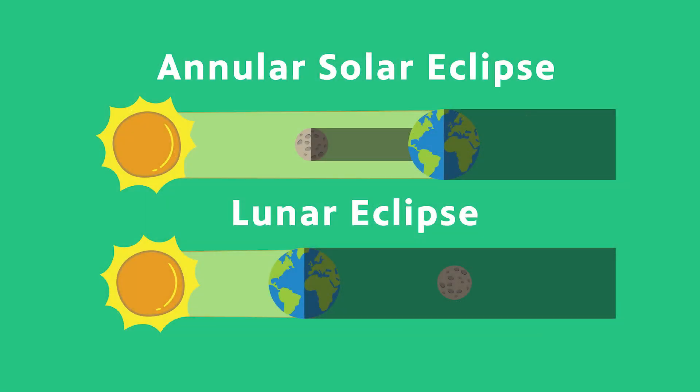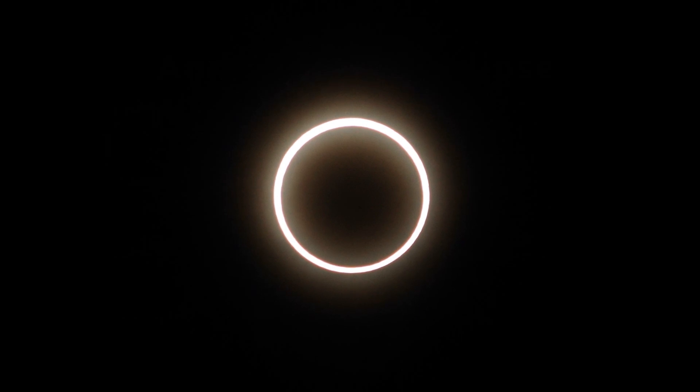With an annular solar eclipse, what happens is because the moon is far enough away in its orbit, it doesn't completely cover the sun's bright surface, and so you see a ring or annulus of bright solar surface around the dark moon.